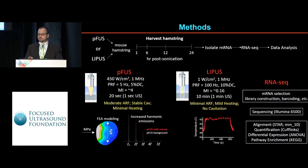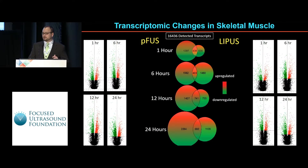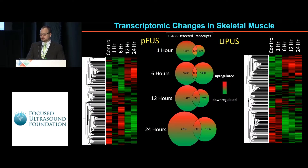Our RNA-seq methods are pretty standard. For differential expression, we use ANOVA, because we want to look at time and treatment as factors. Looking at the data, we see that at each time point with each modality, a number of genes go up and down compared to unsonicated muscle, and we can do hierarchical clustering to show that there are temporal relationships to these gene changes.